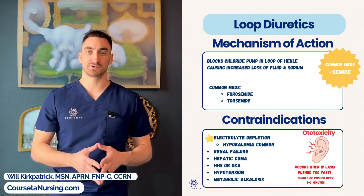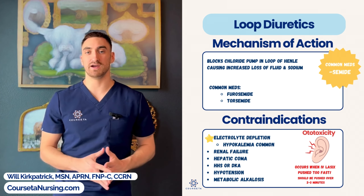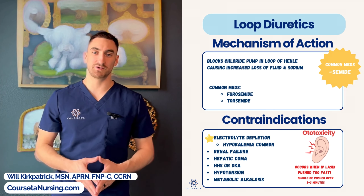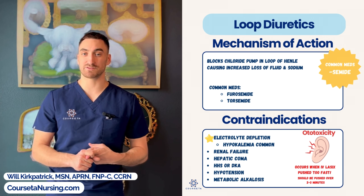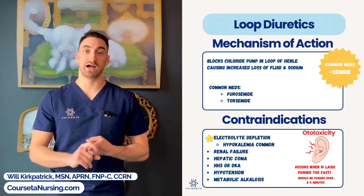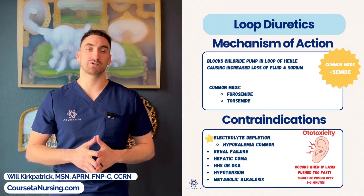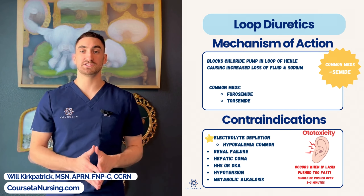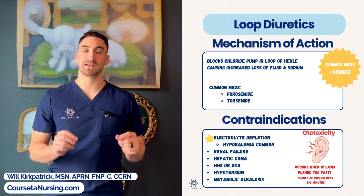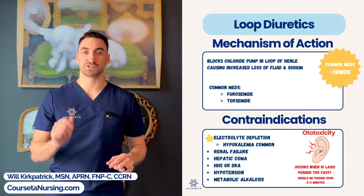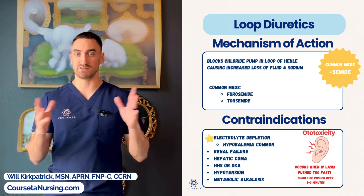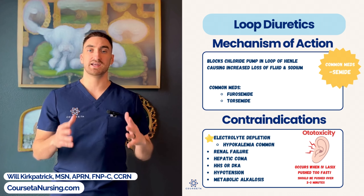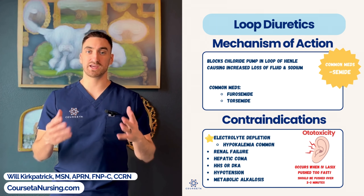On nursing exams and the NCLEX, you'll need to identify adverse effects and contraindications for loop diuretics. They're pretty aggressive — adverse effects include hypovolemia, hyponatremia, hypokalemia, and hypotension. The biggest one to remember is ototoxicity: if you push furosemide IV too fast, you can cause ototoxicity, with a sign being ringing in the ears — tinnitus. Contraindications include patients with renal failure, as loop diuretics can worsen renal failure. Also watch out for electrolyte imbalances, especially hypokalemia, which can cause arrhythmias.